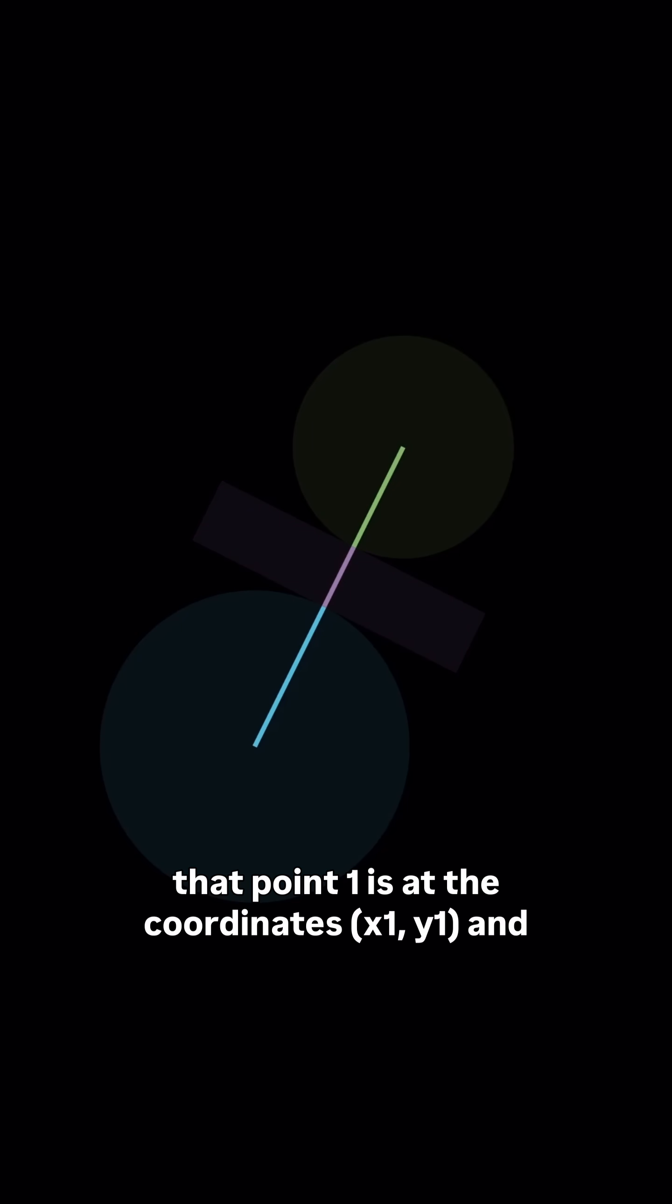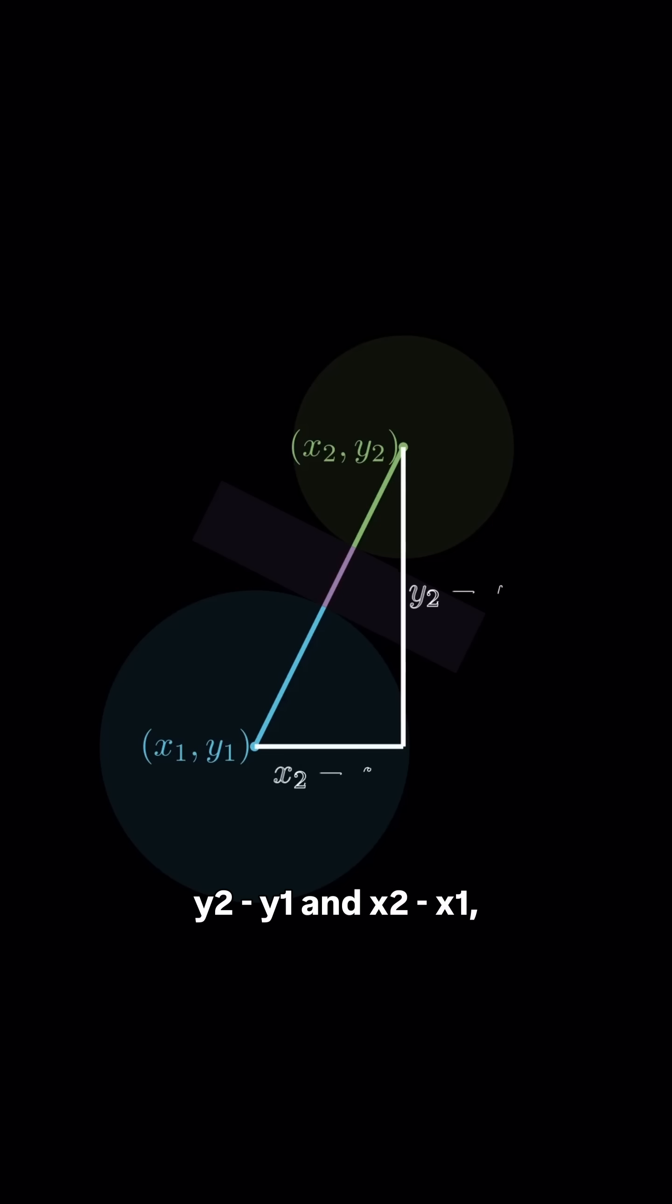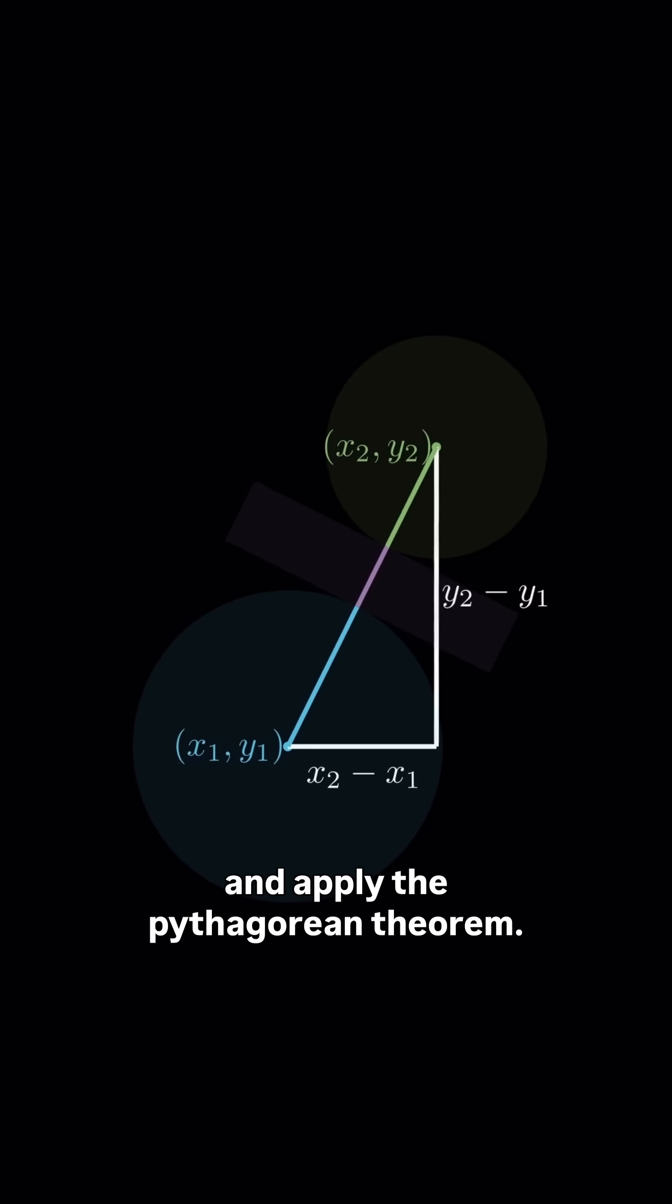So algebraically, let's say that point 1 is at the coordinates x1, y1, and point 2 is at the coordinates x2, y2. Then form our right triangle with the legs y2-y1 and x2-x1 and apply the Pythagorean theorem.